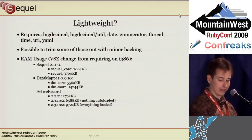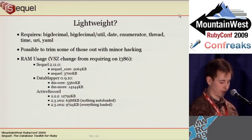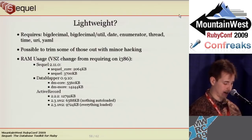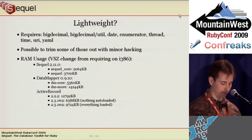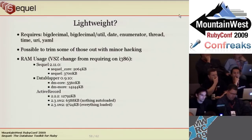Sequel is lightweight compared to AR and DM. Sequel core is 63% smaller than DM core, and all of Sequel is still 33% smaller. All of Sequel is 3.5 times smaller than DM more, and 2.5 times smaller than ActiveRecord. Sequel loads as fast as DM core and 2.5 times faster than AR or DM more. Sequel is comparable to ActiveRecord in performance from benchmarks I've seen, and performance optimization hasn't even been a focus — I've mainly worked on new features, bug fixes, and cleaning the internals.